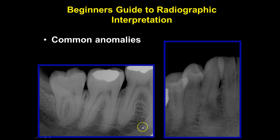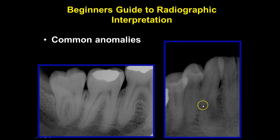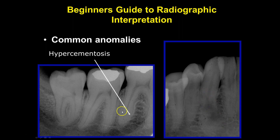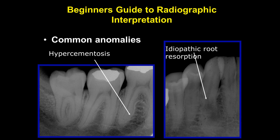Common anomalies here: we have some hypercementosis, more than likely, and significant curling of the roots sitting right on top of the mandibular nerve. This is interesting — there appears to be no root remaining. Follow the shape of the tooth; the canal looks like it's trying to continue but there's nothing left. So again, hypercementosis and idiopathic root resorption — for some reason this tooth has activated osteoclasts stimulating dissolution of the root structure.